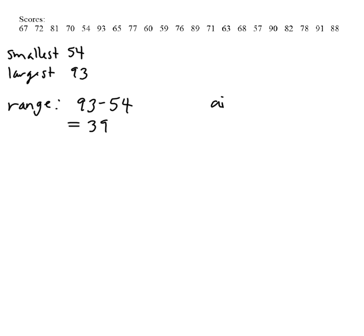Now remember for a histogram, you're aiming to make between 5 and 10 intervals. So you can look at this and think, if I had to split up these numbers into 5 groups or 10 groups, what would I do? So you could have 10 groups of about 4 apart or you could have 5 groups of about 8 apart.